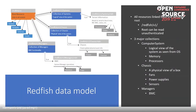This is the Redfish data model. You can see the service root at /redfish/v1, and the root can be read unauthenticated. This is a hypermedia API — all resources are linked from the service root.